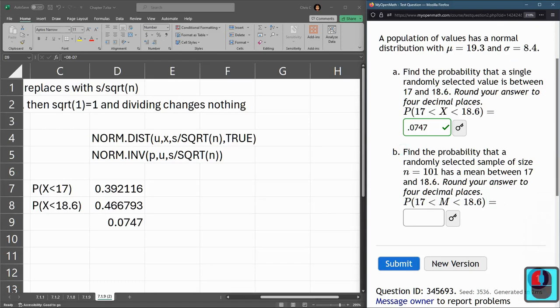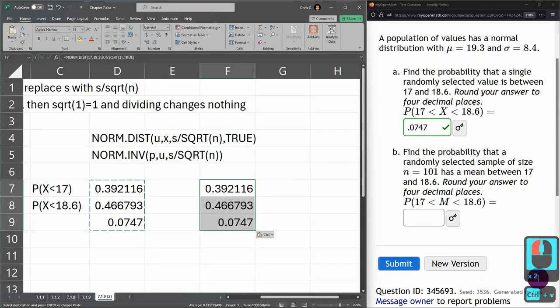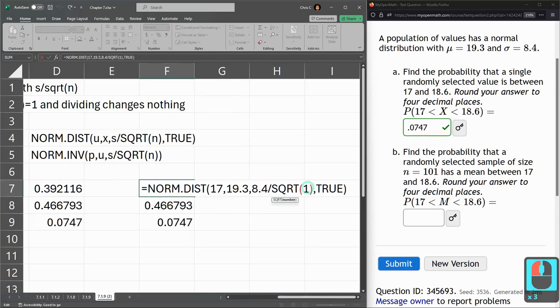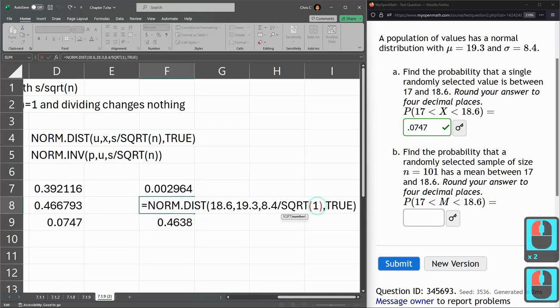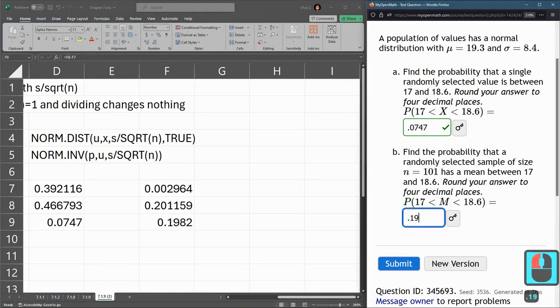Part B, everything is the same, except N is no longer 1, it's 101. So I'm going to grab these, copy, let's paste them right here. Slide this over a little bit. Now I just have to replace this one with 101, and I need to also do it on the other computation. And so that 1982 is part B.